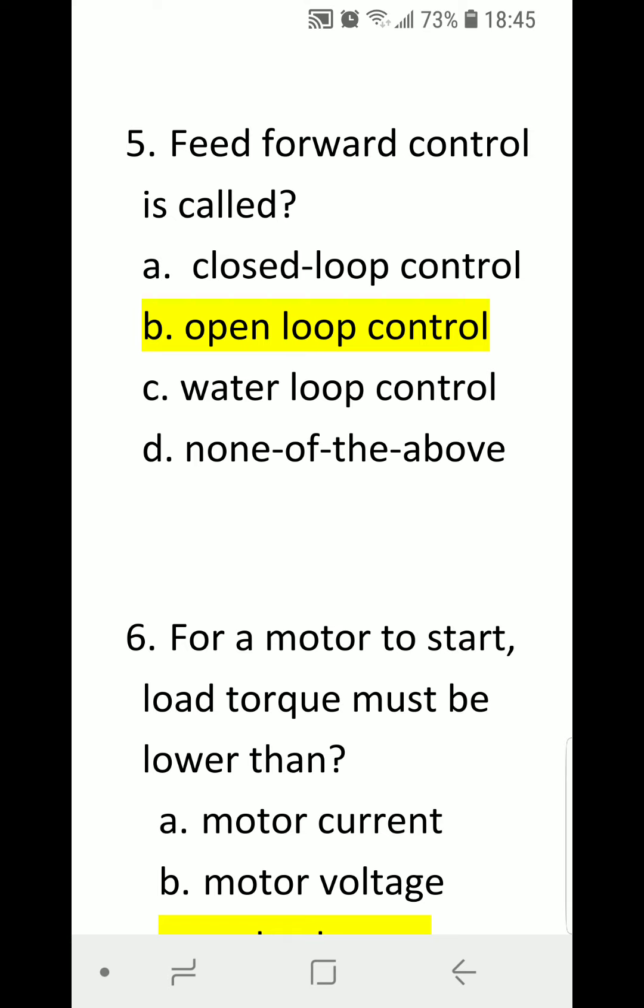Number five: Feed forward control is called A. closed loop control, B. open loop control, C. water loop control, D. none of the above. Correct answer is B. open loop control.